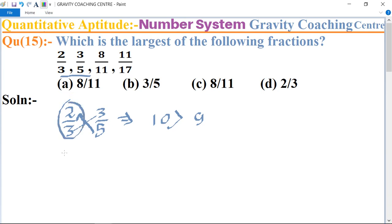Now we compare 2 by 3 with 8 upon 11. So 2 upon 3 and 8 upon 11. Cross multiply.